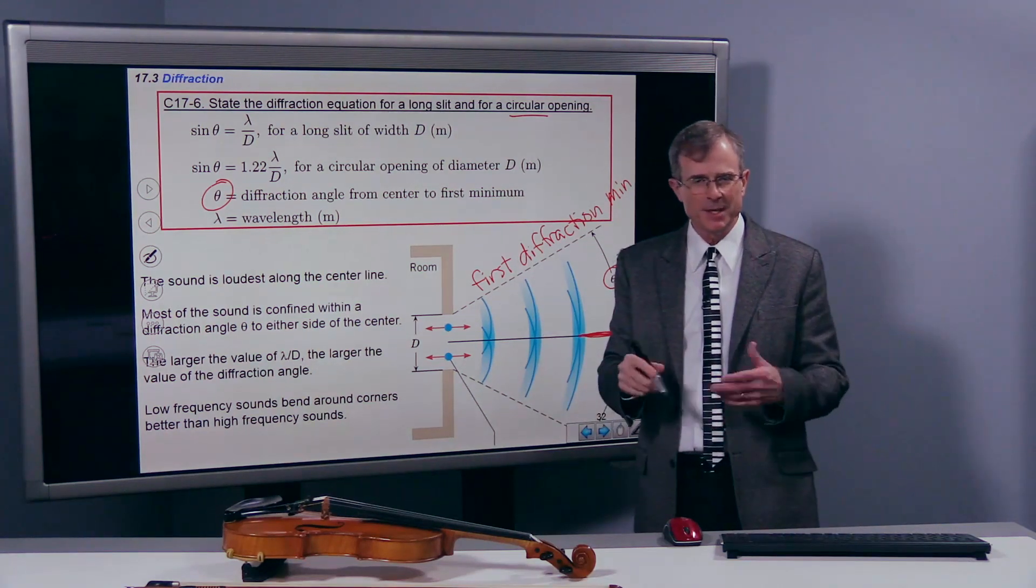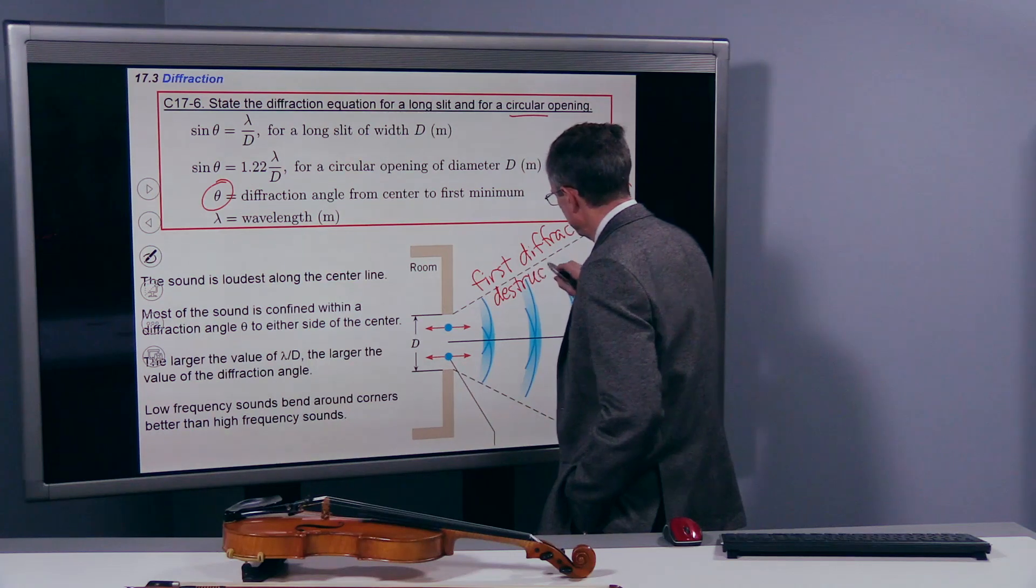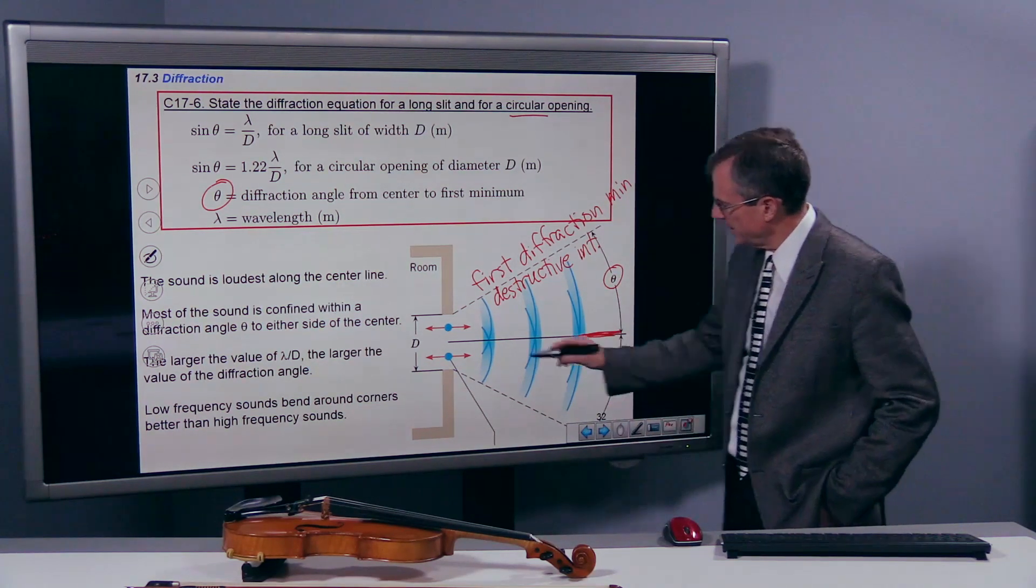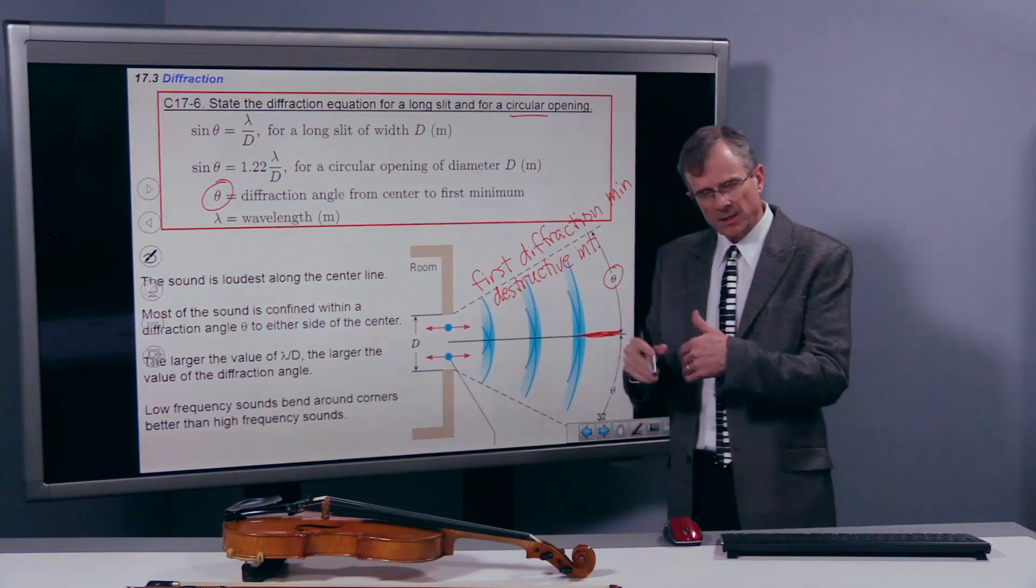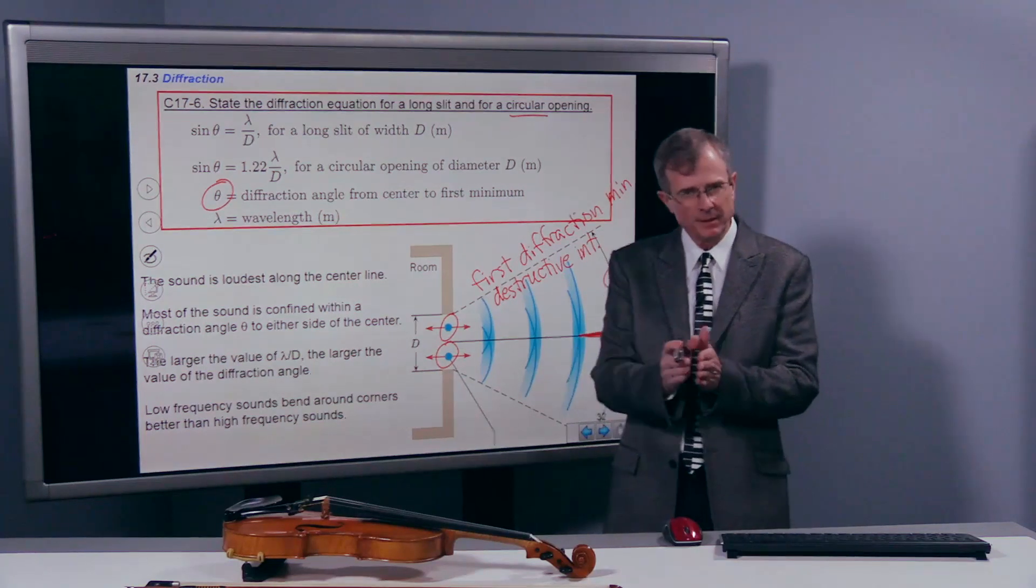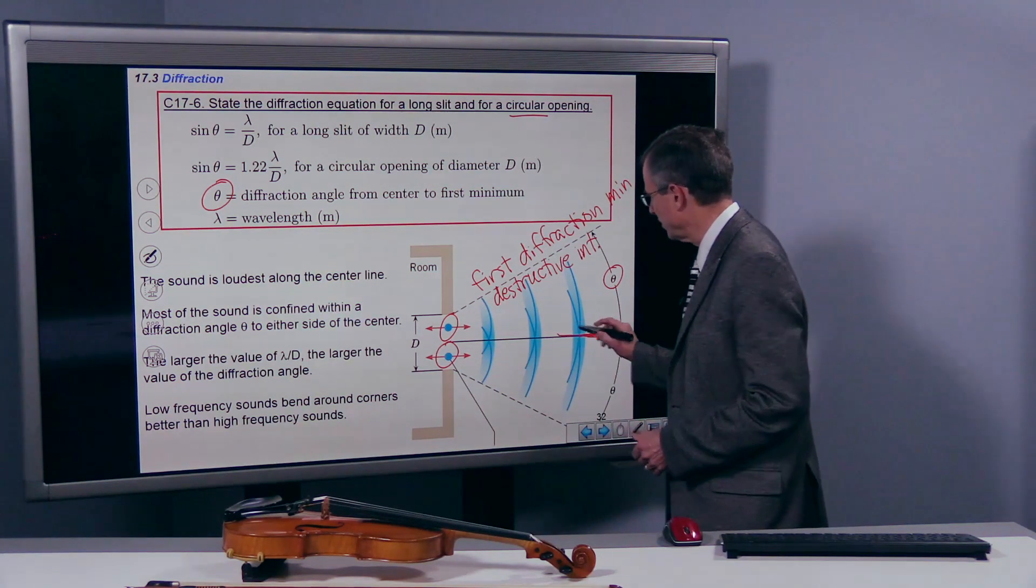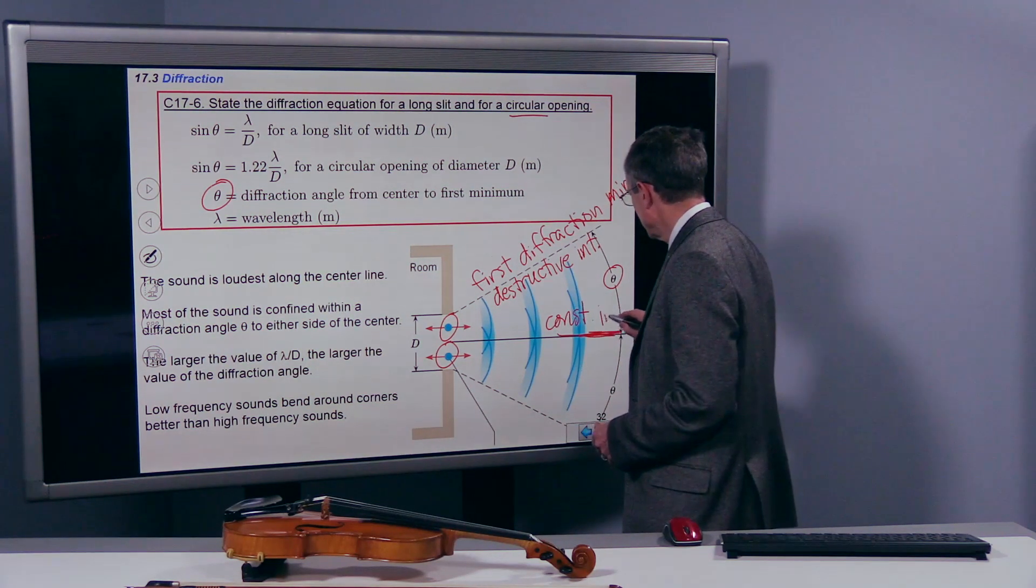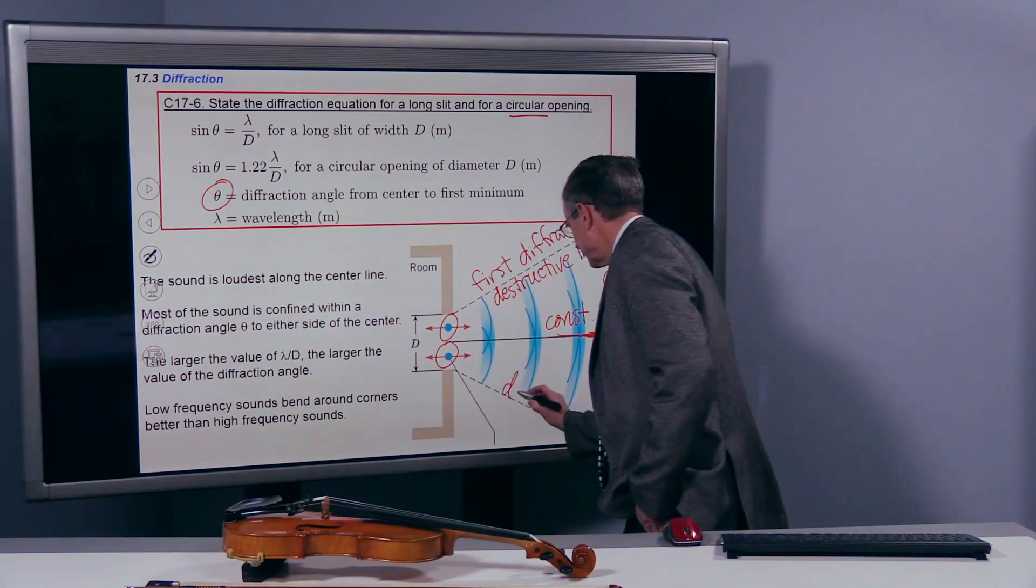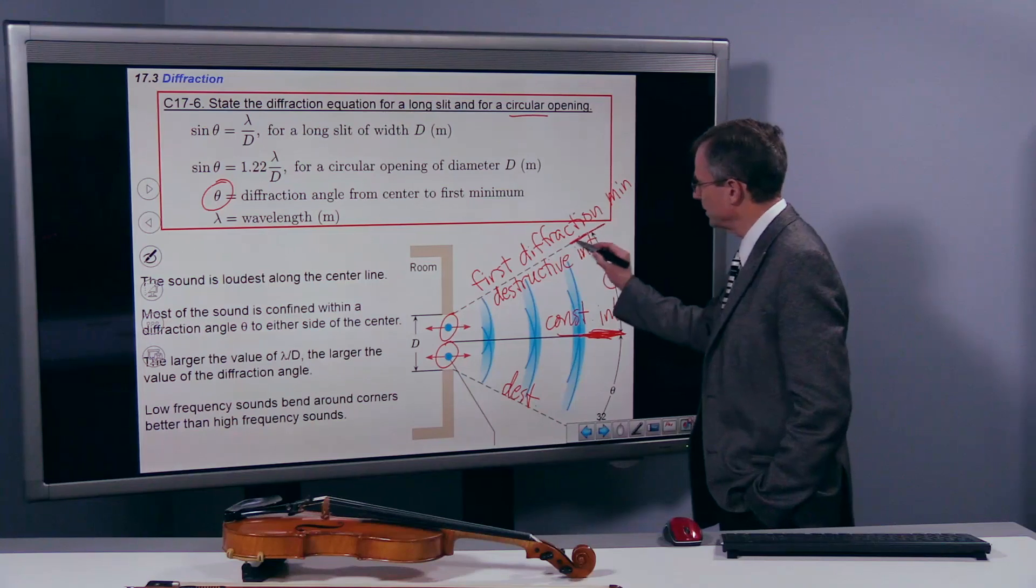That's just the word that physicists use for it. It's nothing more or less than that first line where we get destructive interference. You almost have to think about this as two sources, but it's really a complete continuum of an opening. But if you think about it as two sources, those two sources are going to have constructive interference along the center line, and then they'll have destructive interference along this first diffraction minimum.